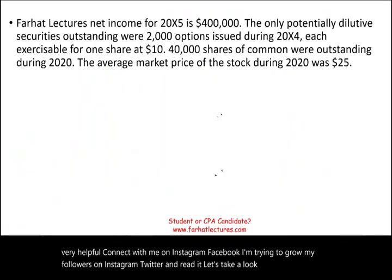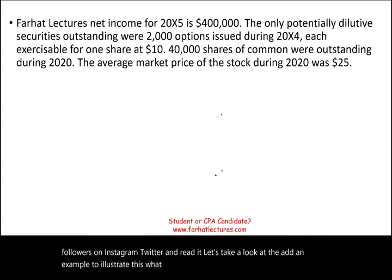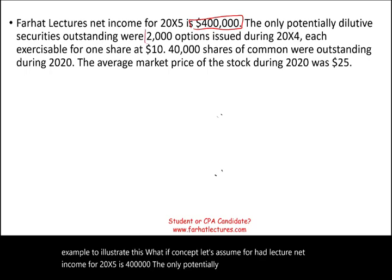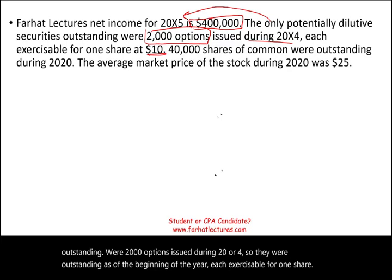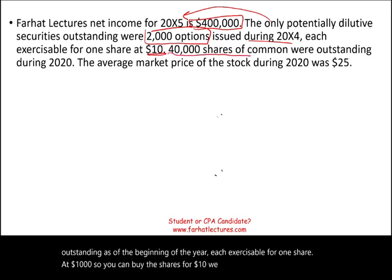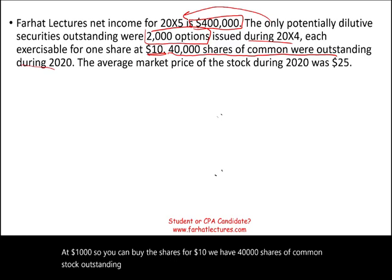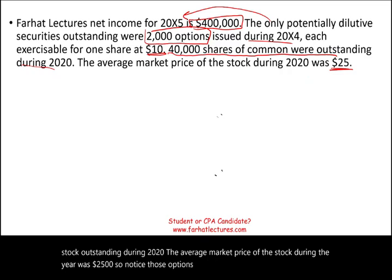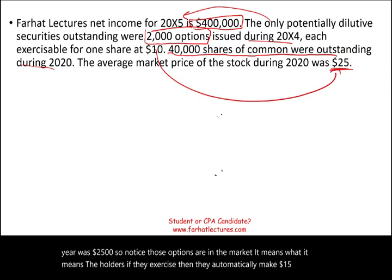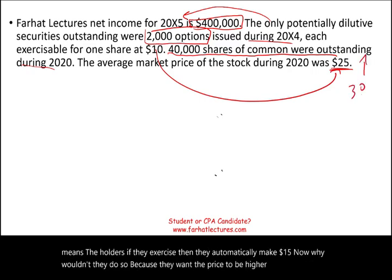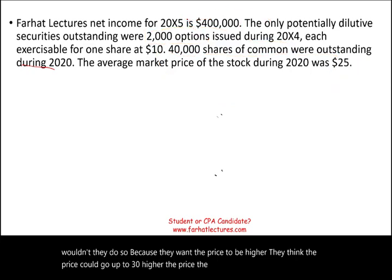Let's look at an example. Assume Farhat Lecture's net income for 20X5 is $400,000. The only potentially dilutive securities outstanding were 2,000 options issued during 2004, so they were outstanding as of the beginning of the year. Each option is exercisable for one share at $10. There are 40,000 shares of common stock outstanding during the year. The average market price of the stock during the year was $25. Notice those options are in the money — the holders, if they exercise them, automatically make $15 per share.